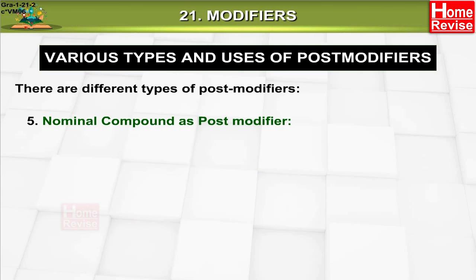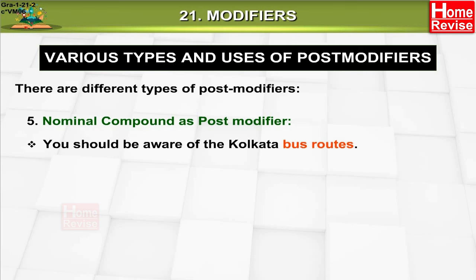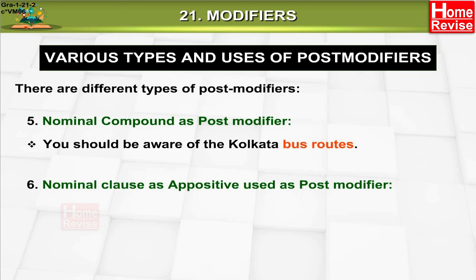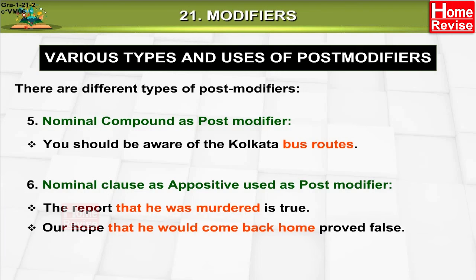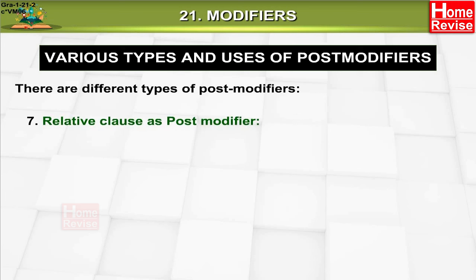Five: nominal compound as post-modifier. Example: 'You should be aware of the Kolkata bus routes.' Six: nominal clause used as post-modifier. Example: 'The report that he was murdered is true.' 'Our hope that he would come back home proved false.' Seven: relative clause as post-modifier. Example: 'The boy who saved the girl is a scout.'